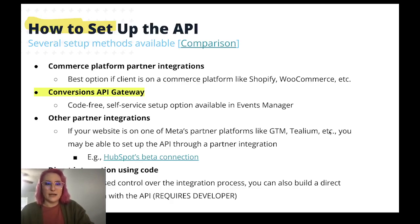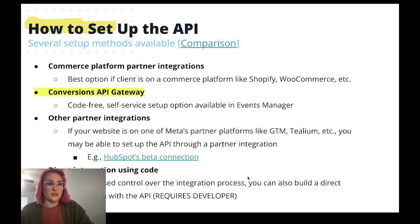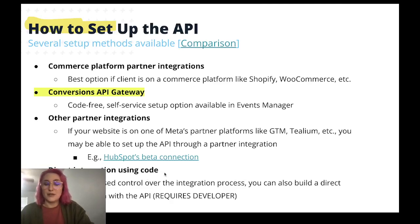So then how to set it up — there are several setup methods available. You can do direct connections if you or your client are on a commerce platform like Shopify or WooCommerce. There's the Conversions API gateway, which is what I'm going to go through today. There are also some other partner integrations — it looks like you can do it through GTM, Telium, and HubSpot also has a beta connection, though it might be out of beta by now, so definitely check on that. And then lastly, and probably the most difficult way to do it, you can also do a direct integration via code.